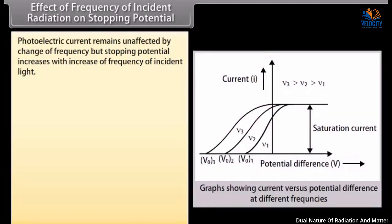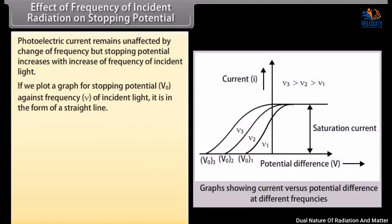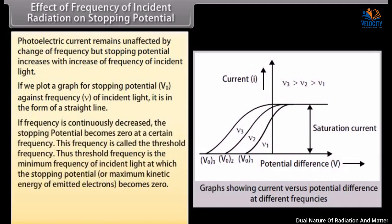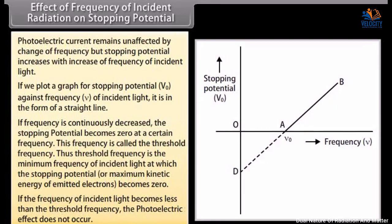The photoelectric current remains unaffected by change of frequency, but the stopping potential increases with increase of frequency of incident light. If we plot a graph for stopping potential V0 against frequency ν of incident light, it is in the form of a straight line. If the frequency is continuously decreased, the stopping potential becomes zero at a certain frequency. This frequency is called the threshold frequency — the minimum frequency of incident light at which the stopping potential or maximum kinetic energy of emitted electrons becomes zero. If the frequency of incident light is less than the threshold frequency, the photoelectric effect does not occur.